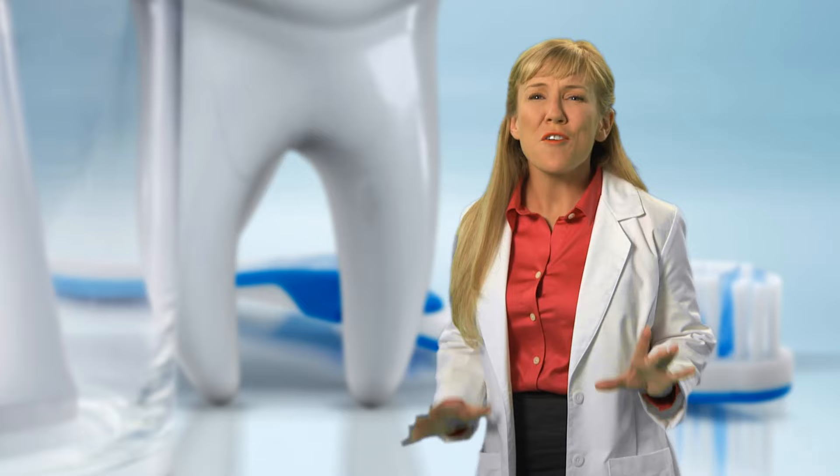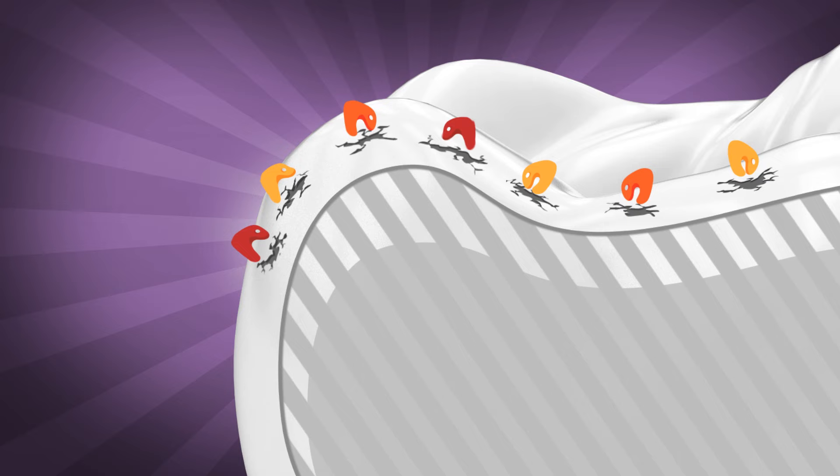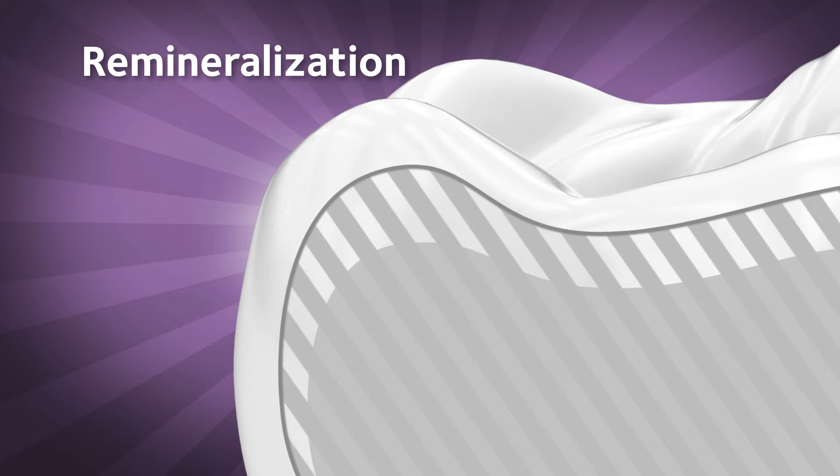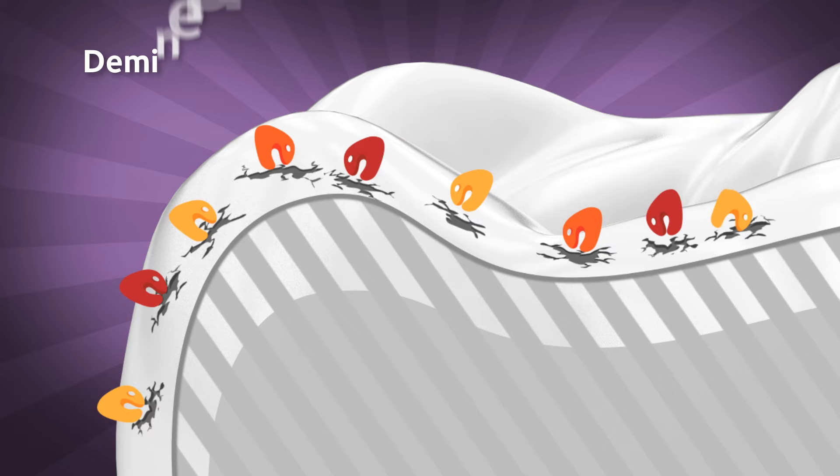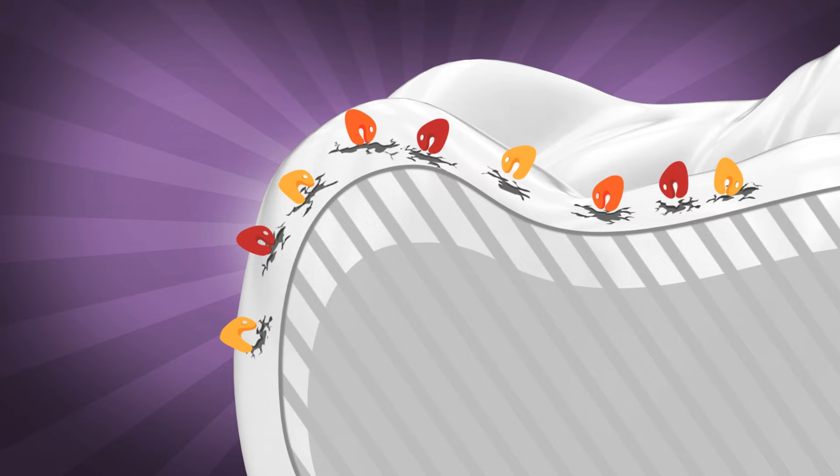Fortunately, another process is also happening. Once the acid attack slows down, the calcium and phosphate in the saliva go back into the enamel in a process called remineralization. It's a constant seesaw battle. Cavities start when there's more demineralization than remineralization.